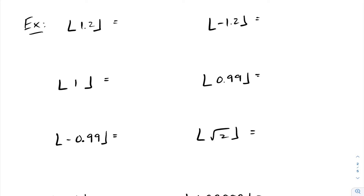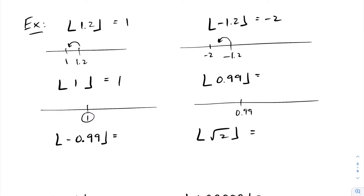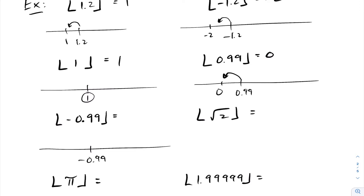Let's go through more examples. The floor of 1.2: moving left on the number line from 1.2, the first integer encountered is one, so the floor is one. For negative 1.2, moving left the first integer is negative two, so the floor of negative 1.2 is negative two. The floor of 1 is 1, since the greatest integer less than or equal to 1 is 1. The floor of 0.99 is 0, and the floor of negative 0.99 is negative one.